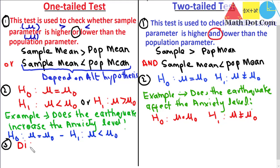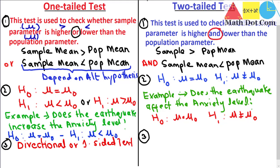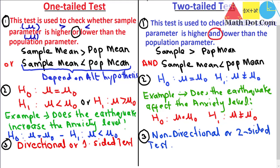Another difference: a one-tailed test is also known as a directional or one-sided test, while a two-tailed test is also known as a non-directional or two-sided test, because in this test we are concerned with two sides — greater than and less than both.